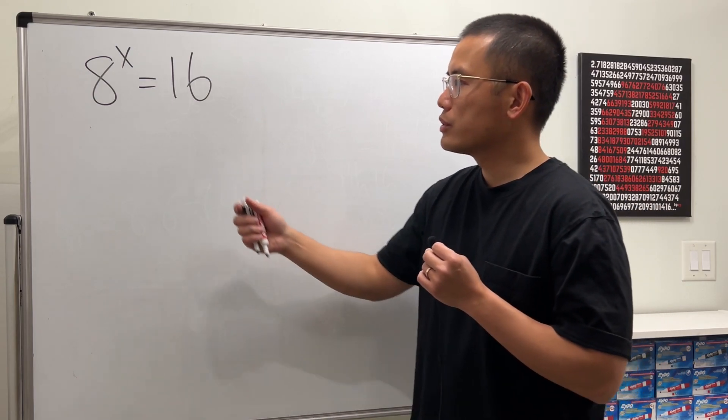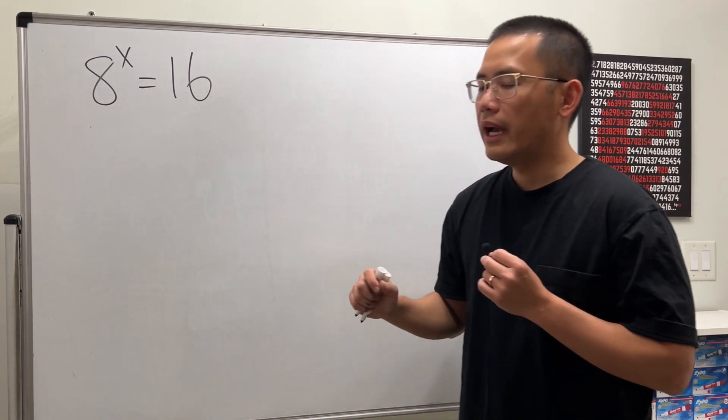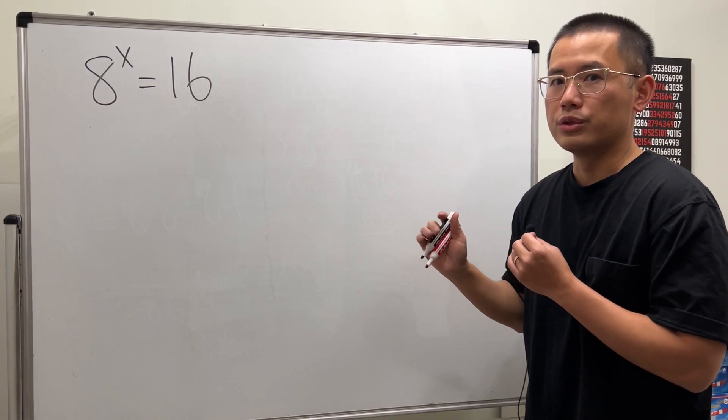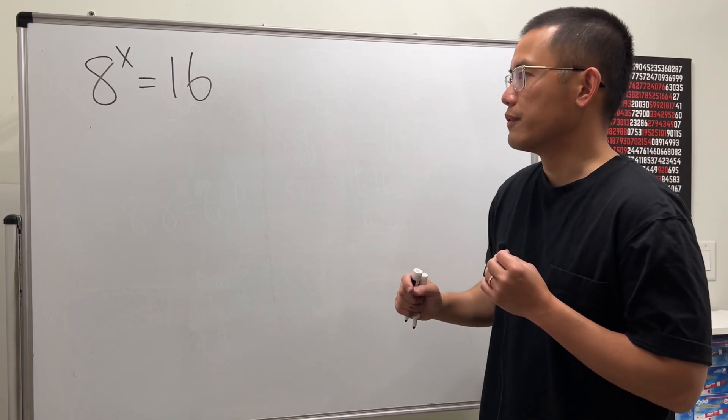The first way is we can actually make the bases equal, and then the second one is we can actually use the logarithm. So start with the first way.